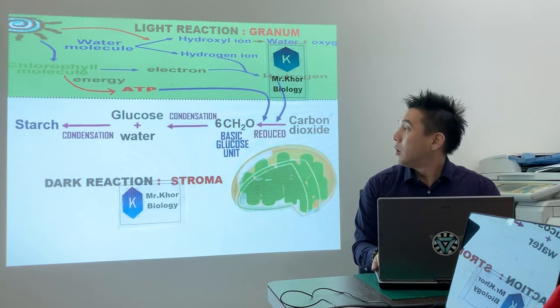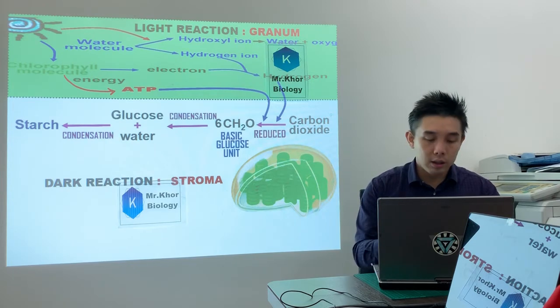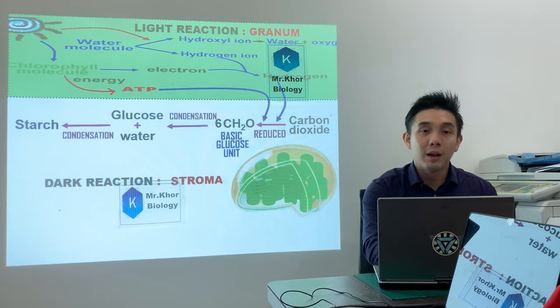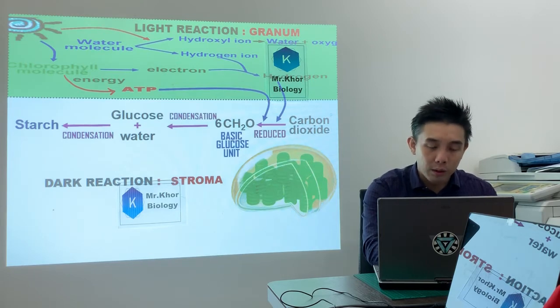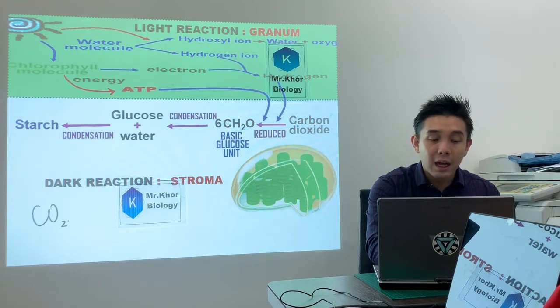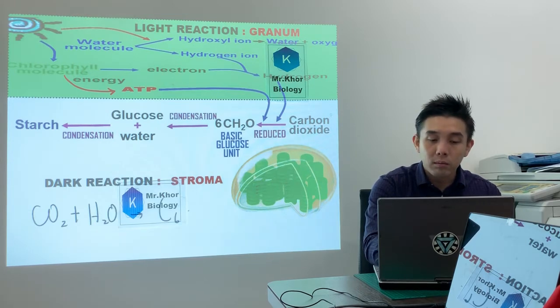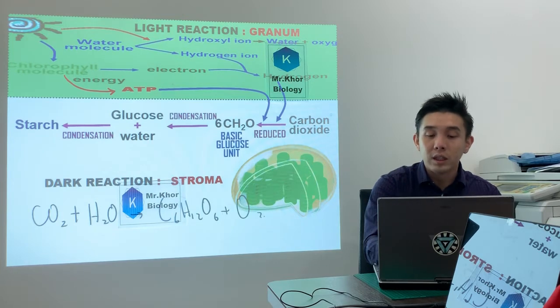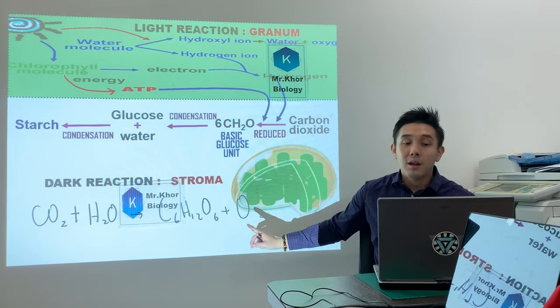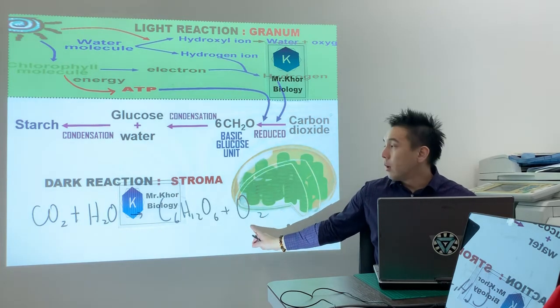Now in short, this is the equation that you must know, the chemical equation that you must know. Plants need carbon dioxide and water, finally form C6H12O6 as well as oxygen. This is the equation for photosynthesis you must have out.